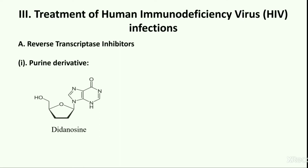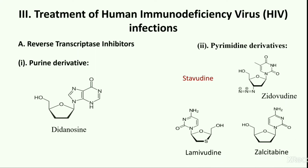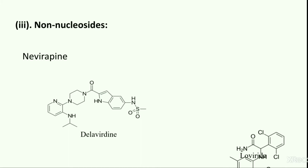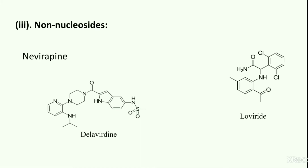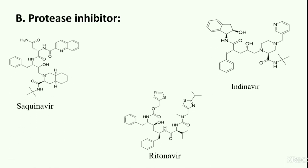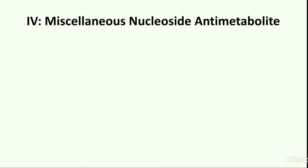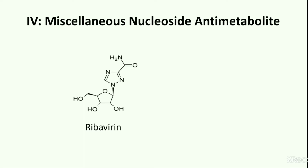Didanosine is a purine derivative, while stavudine, zidovudine, lamivudine and zalcitabine are pyrimidine derivatives. The third subcategory of reverse transcriptase inhibitors — non-nucleosides — contains nevirapine, delavirdine and loviride. Saquinavir, indinavir and ritonavir are protease inhibitors. Zintavir is an integrase inhibitor drug. The last main category, miscellaneous nucleoside antimetabolites, includes ribavirin. Ribavirin is an antiviral medication used to treat RSV infection, hepatitis C and some viral hemorrhagic fevers.